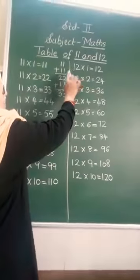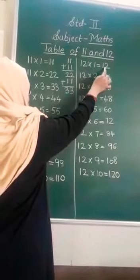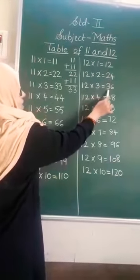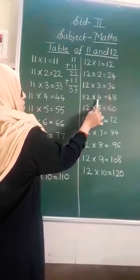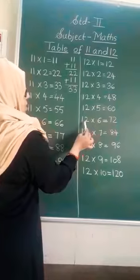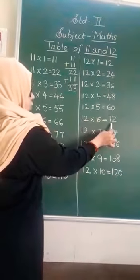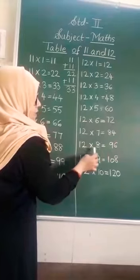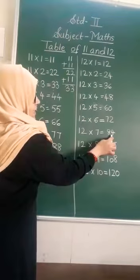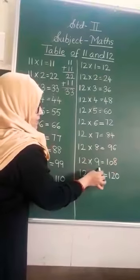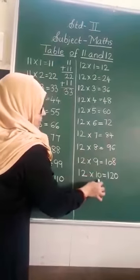Now move to the table of 12. 12 ones are 12, 12 twos are 24, 12 threes are 36, 12 fours are 48, 12 fives are 60, 12 sixes are 72, 12 sevens are 84, 12 eights are 96, 12 nines are 108, 12 tens are 120.